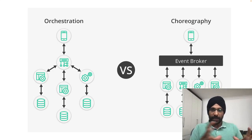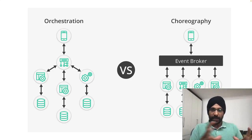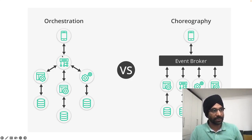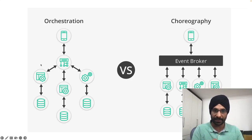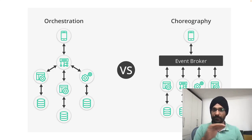Comparing orchestration and choreography: in orchestration you have a single central authority managing all services, issuing commands and compensations. In choreography you have a central message bus or event broker where all events get published and all services consume or publish to that central piece of middleware.